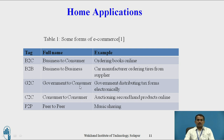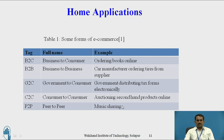G2C — Government to Consumer — is used for government distributing tax forms electronically. C2C — Consumer to Consumer — is used for auctioning and selling second-hand products online. If a user wants to sell a second-hand product online, they can use the consumer-to-consumer concept. P2P — Peer to Peer — can be used for music sharing. If a user wants to share music online, they can use the P2P peer-to-peer concept.